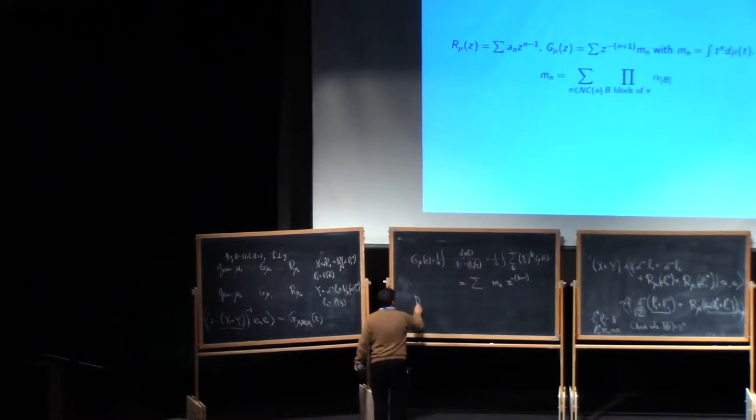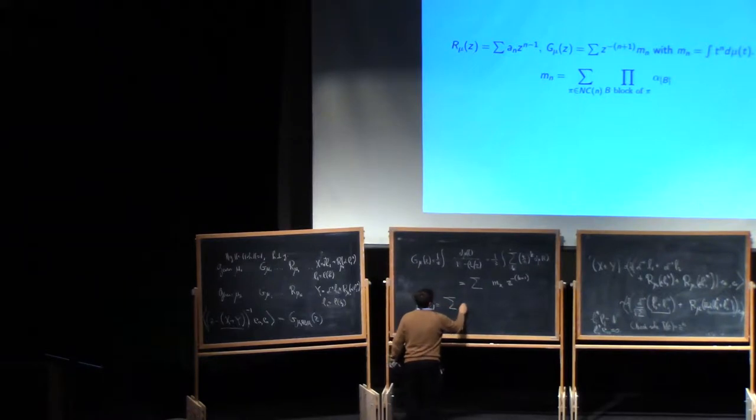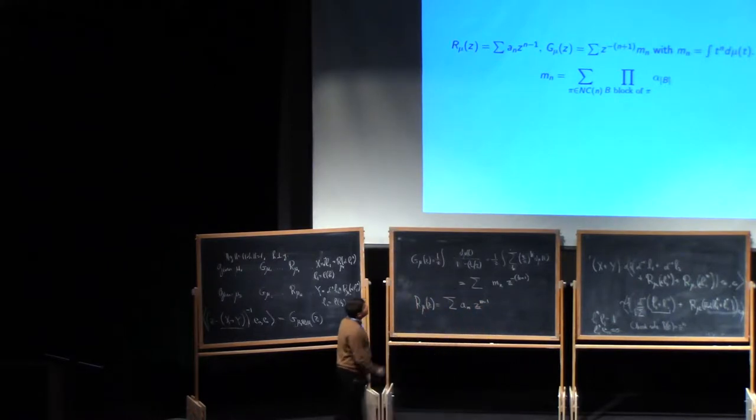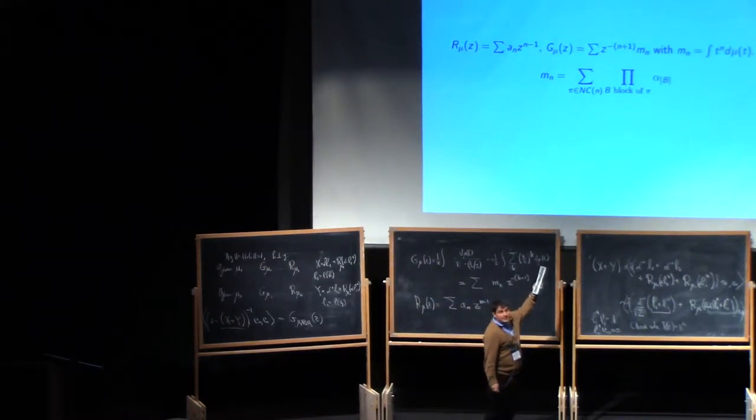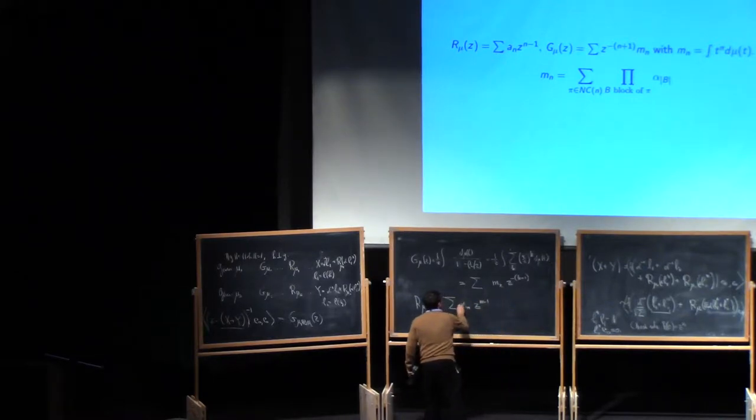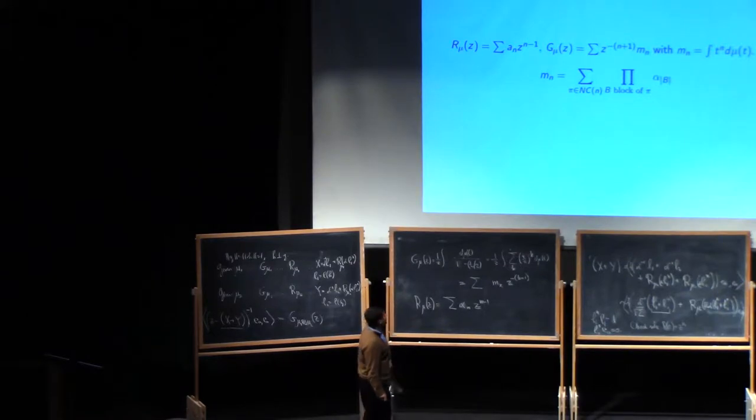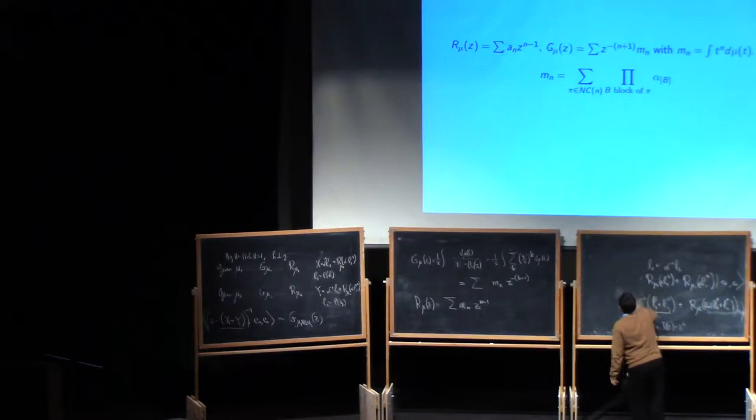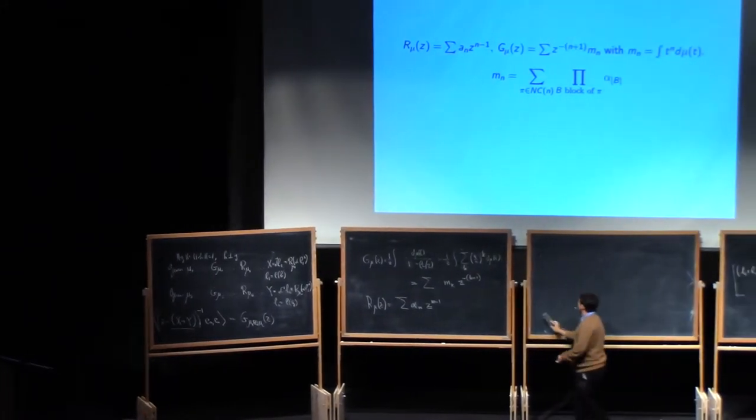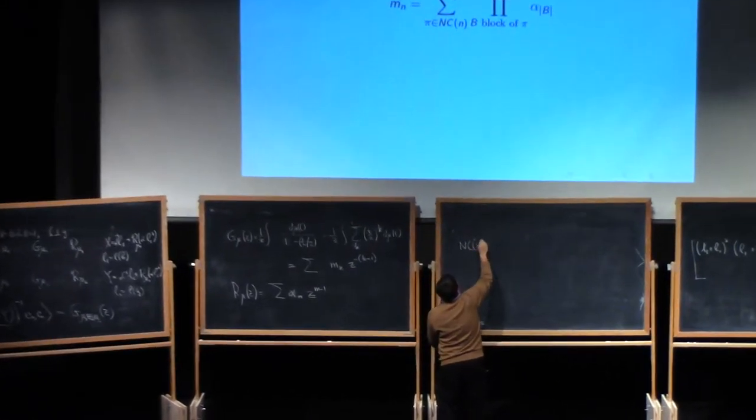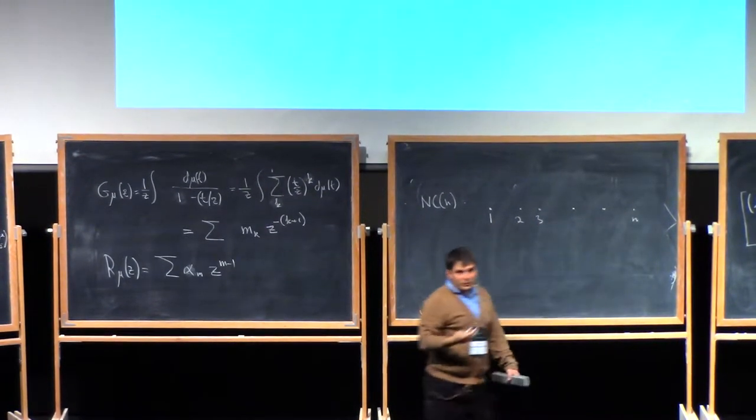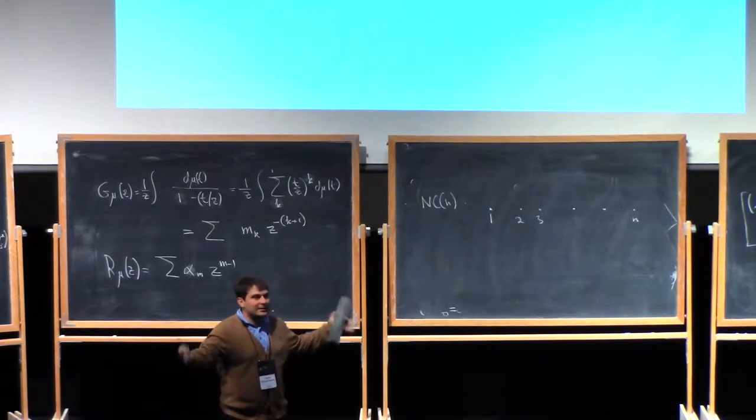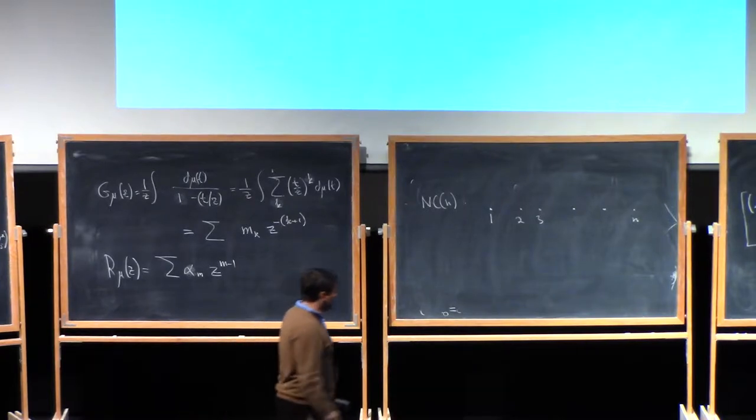Now, the R transform can also be expanded. I told you in this case it's an analytic function. So it's some sum, say, Am Z to the M minus 1. And it turns out there's a very pretty formula, combinatorial formula, that links the numbers Mn and the numbers alpha n. So the only thing that should be explained there is what is Nc of n and what does it mean to be a block. So Nc of n here is the set of all non-crossing partitions. So Nc of n, well, you have numbers between 1 and n, you order them. And then you look at all possible partitions, which means you write the set as a disjoint union of subsets. But these partitions are supposed to be non-crossing.